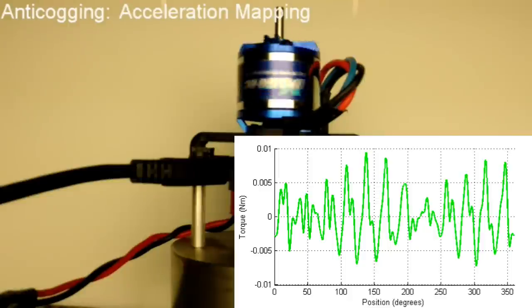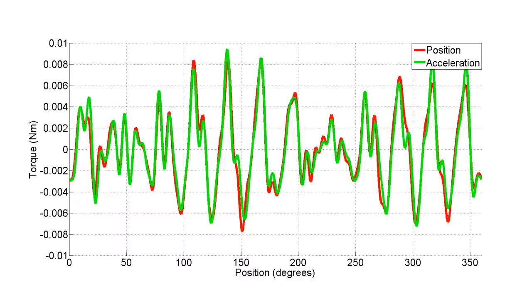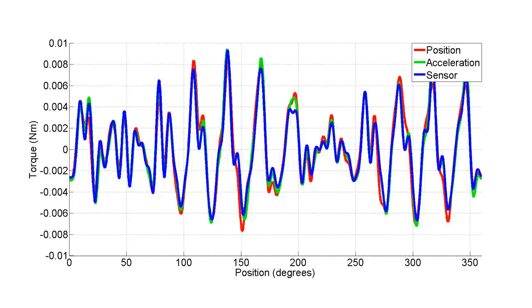The second method is to spin open loop as slowly as possible, and map the accelerations. You can see these two maps agree nicely with each other, but to double check, we used a force torque sensor during testing to validate the two methods.